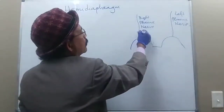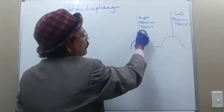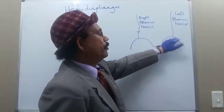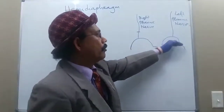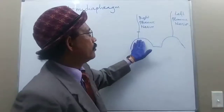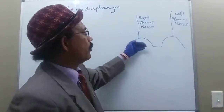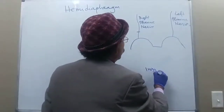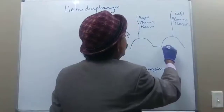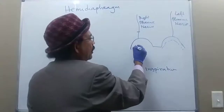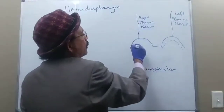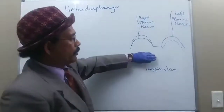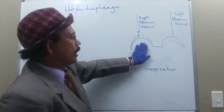If there is a lesion on one side — left or right — that dome of the diaphragm will not move. The healthy side dome will move during inspiration and go down. The paralyzed dome, because it has lost the capacity to contract its muscle, the abdominal content will push it up. So during inspiration, the paralyzed side goes up.